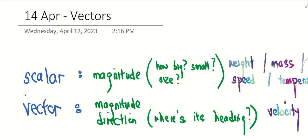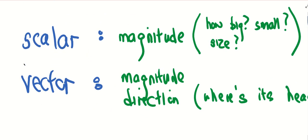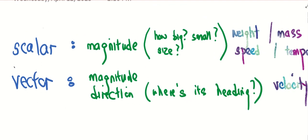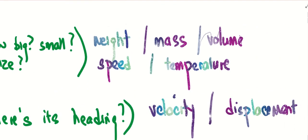Okay, so this is a new topic on vectors. Recall what you did in physics. In scalar, we talk about a number which is the magnitude. It will tell you about the size, how big and how small they are. Examples of scalar are weight, mass, volume, speed, and temperature.